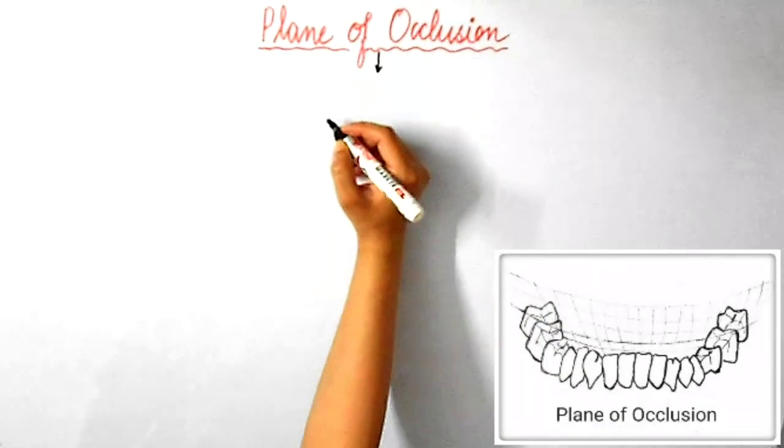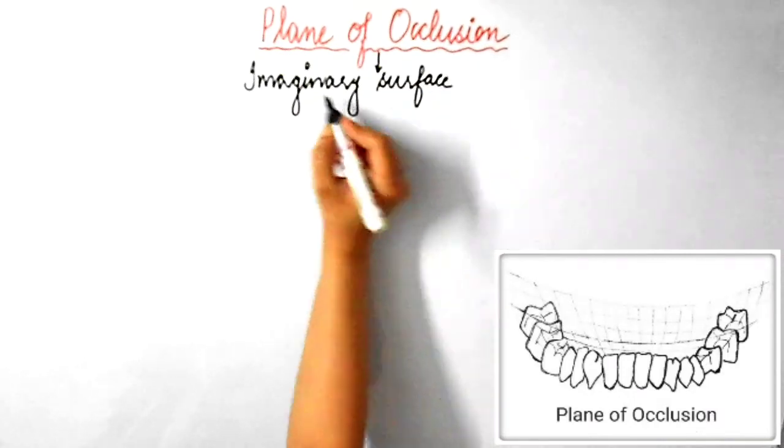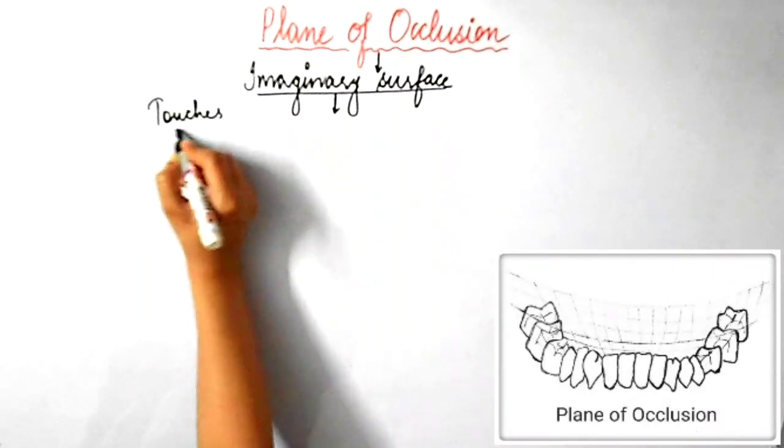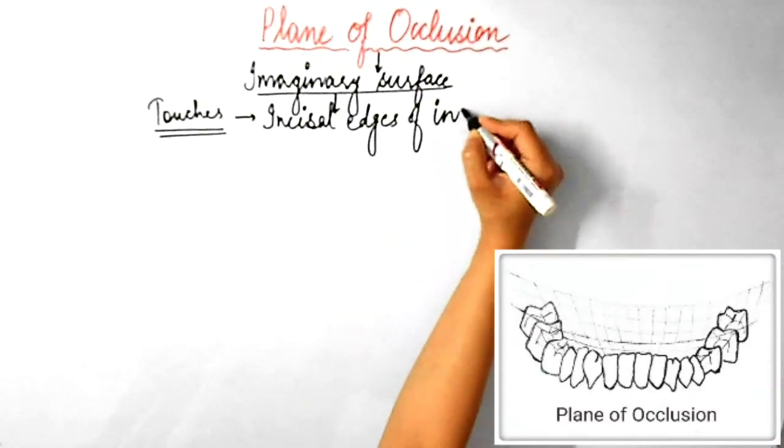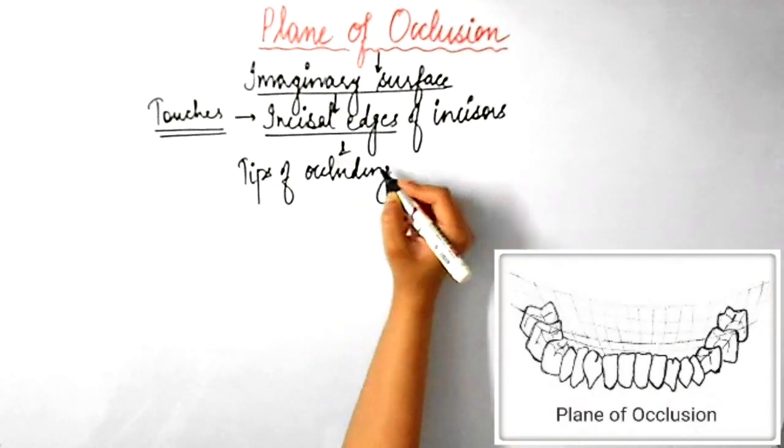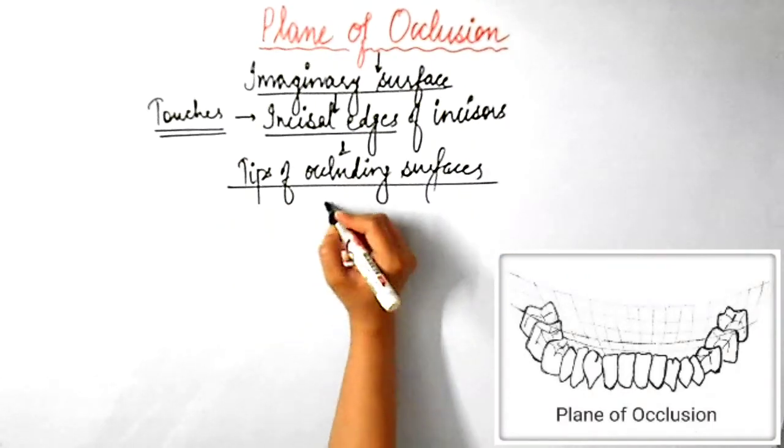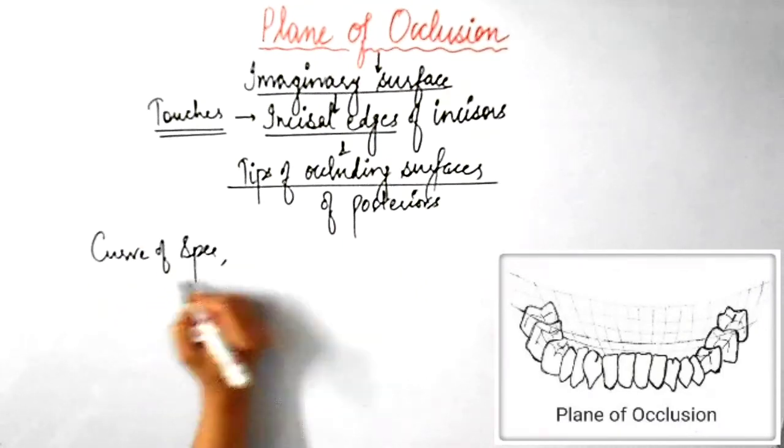So, what do we mean by plane of occlusion? The term plane of occlusion refers to an imaginary surface or an average plane that theoretically touches the incisal edges of the incisors and the tips of the occluding surfaces of the posterior teeth, as you can see in this picture.